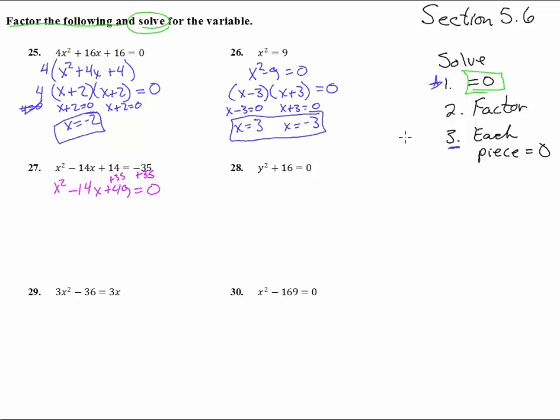So now we've got to factor it. This is a trinomial with leading coefficient one, so that's a fast one. We have an x and an x, and the numbers that times to 49 and add to negative 14 would be negative 7 and negative 7. Or you could have recognized that x squared and 49 were both perfect squares and that half of negative 14 is negative 7. That would also work.